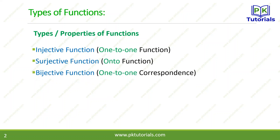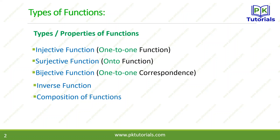bijective function, or one-to-one correspondence. یہ 3 main types ہیں۔ اس کے علاوہ جو کچھ types یا properties ہیں وہ ہم اگلے lecture میں پڑھیں گے — inverse function، composition of function یعنی functions کو اکٹھا کرنا، اور آخر میں floor and ceiling function۔ یہ سب next lecture میں دیکھیں گے۔